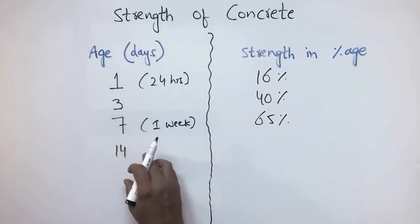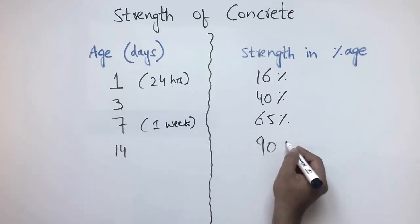After 14 days of the concrete pouring, it gains almost 90 percent of its strength.